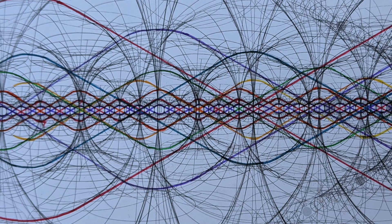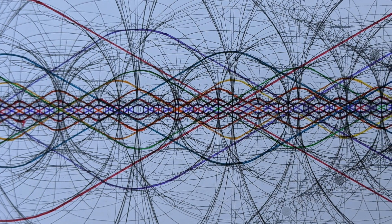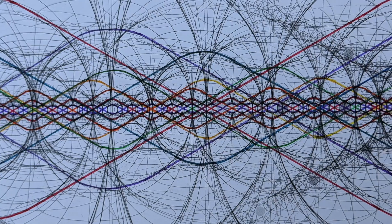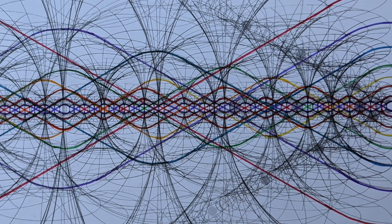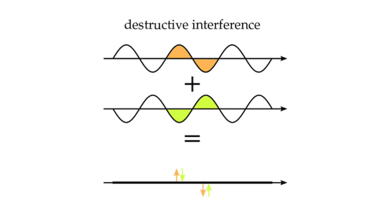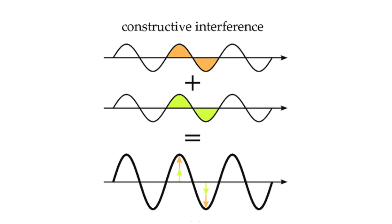Along these filaments, constructive and destructive wave interference also occurs, which is largely responsible for the reality we experience. Destructive interference is when two waves traveling in the same direction are aligned at the crest of one wave and the trough of the other — the waves cancel out. Constructive interference is when two waves traveling in the same direction overlap and their crests combine to produce a larger wave.